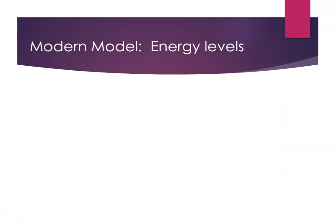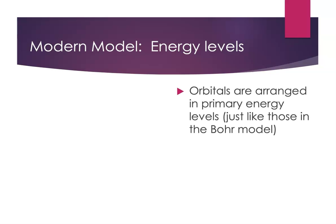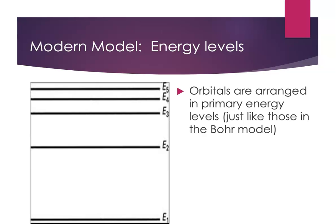One of the features about the Bohr model that makes it so useful is that we had energy levels at those fixed orbits. In the modern model, we also have energy levels. The orbitals are arranged in primary energy levels, and in fact those energy levels correspond exactly to the energy levels that the Bohr model talked about. So we can have the first energy level, the second energy level, the third energy level. Notice how the spacings get closer and closer as we get farther away from the nucleus. But it's a little harder conceptually to figure out how the orbitals are arranged in these energy levels — it was so easy with our fixed circular orbits.